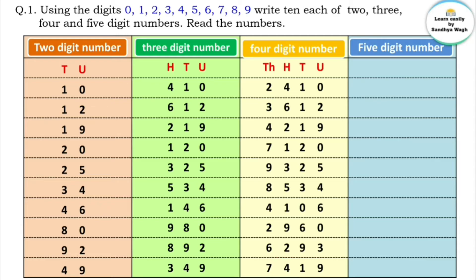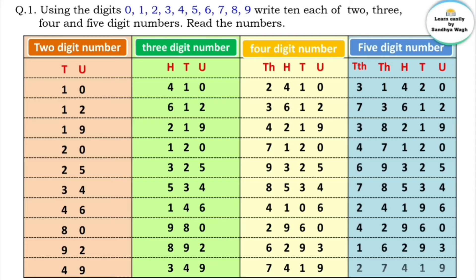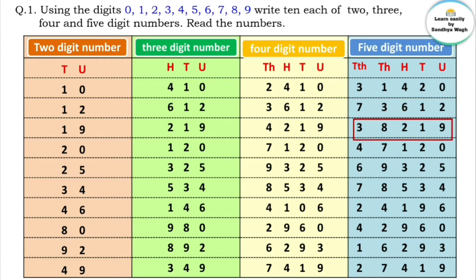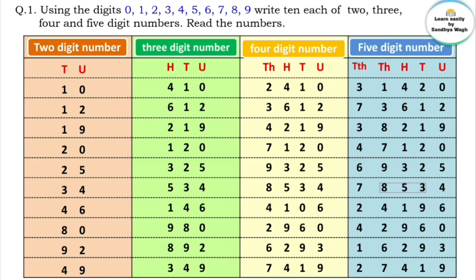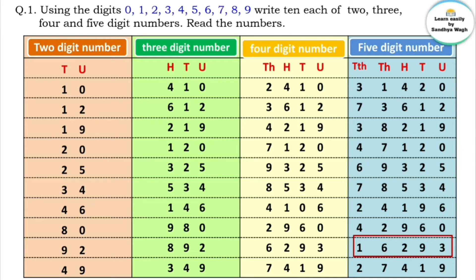Now let's make five-digit numbers. The places are units, tens, hundreds, thousands, and ten thousands. The numbers are: 31,420; 1,690; 420,733; 612,381; 219,470; 8,226; 78,534; 24,196; 42,960; 16,293; 27,419.